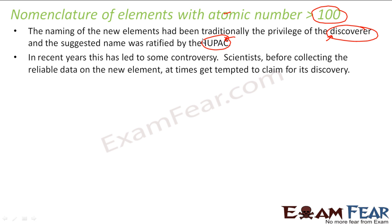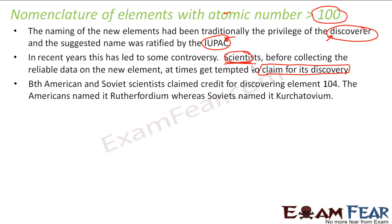But there have been scenarios where controversy arose because of naming. Scientists, before collecting reliable data, used to get tempted to claim discovery — because if somebody has found an element, it is a big privilege. The element is named after them and they get all the name and fame. Scientists, just to get the name and fame, would claim discovery of a particular element before even getting reliable data. This scenario happened where American and Russian scientists both claimed discovery of element 104.